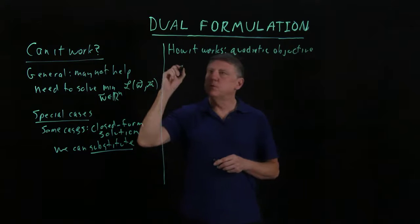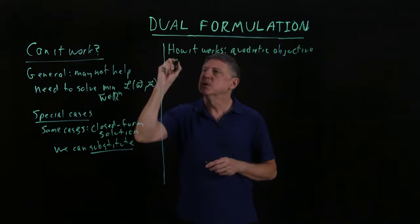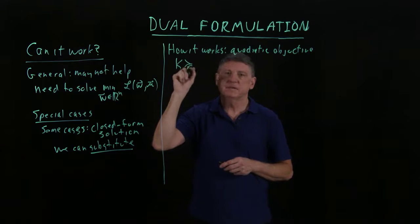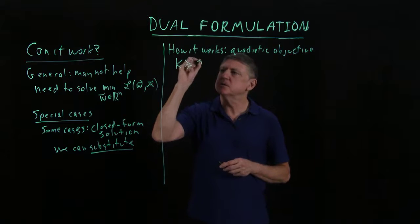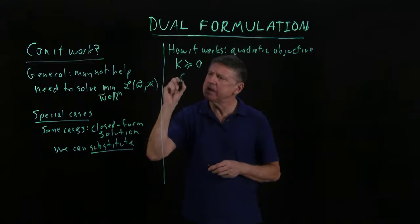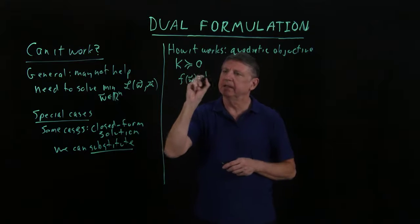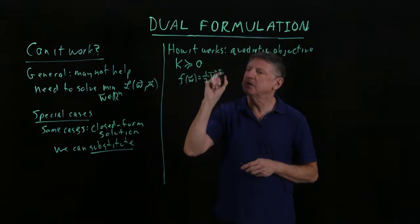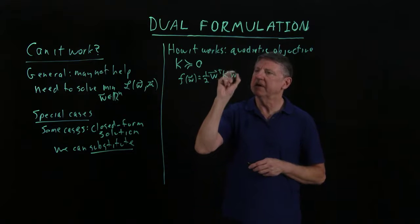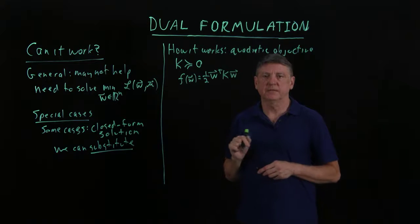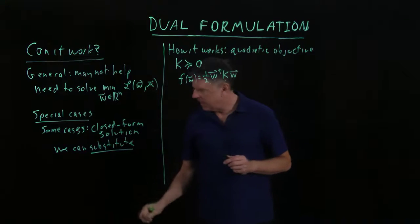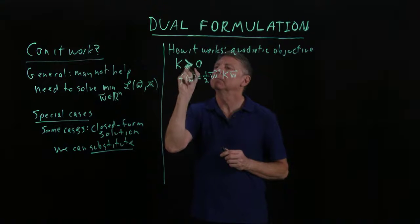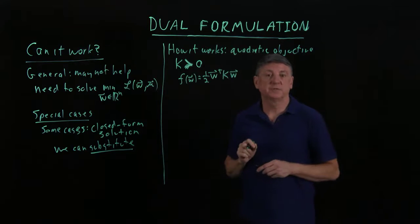Suppose that we have a symmetric positive semi-definite matrix. Actually, let's make it symmetric positive definite. And suppose that our objective is one half of - we transpose the argument, multiply it by the matrix, and then solve that.